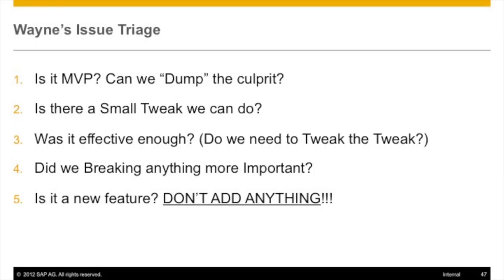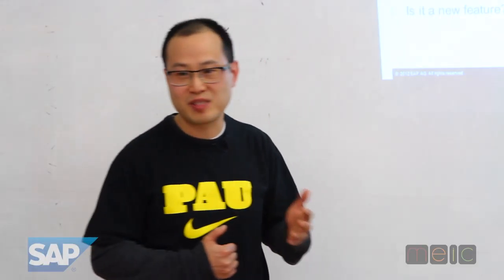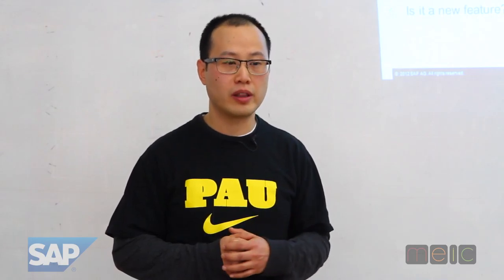Even if you had the desire to do that perfect fix, you might need to implement something first just to figure out what the perfect fix is. It's non-deterministic at that point because you don't know what the impact would be. This is Wayne's issue triage flowchart. First, if something really pops up, my first question would be: is it part of the minimal viable product? Can we dump it? That is by far the easiest tweak — to remove something. It's the cheapest, safest, with the least effect on other parts of the system. Sometimes it's better to ship with fewer but more stable features. Omitting something is definitely a valid tweak.